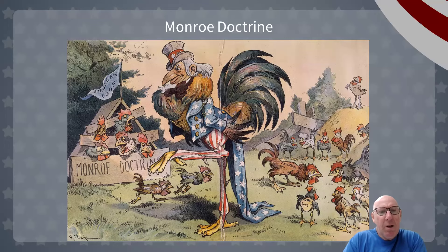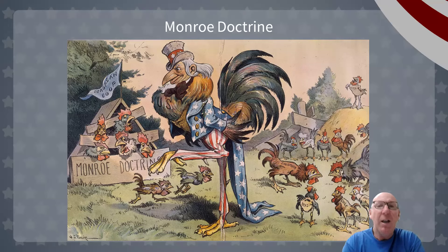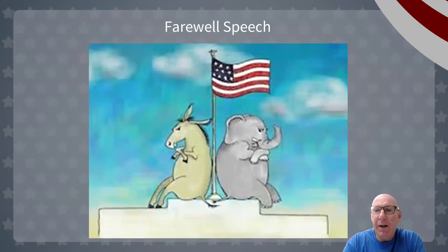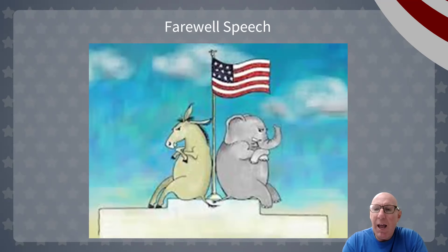The Monroe Doctrine, depicted here with a large rooster controlling the female chicks — representing the various countries with whom we want to trade — while the European countries are tied up and not allowed in the Western Hemisphere to influence America's domination. Recall that President George Washington reminded us in his farewell address of two things: first, do not get involved with any European affairs; and second, do not have any political parties. Both of which we basically ignored, going on to have a two-party system and getting involved with entanglements across the globe.